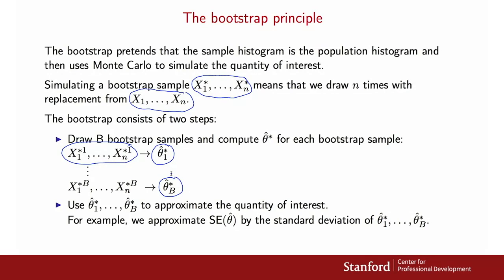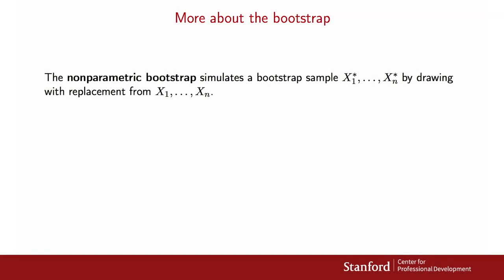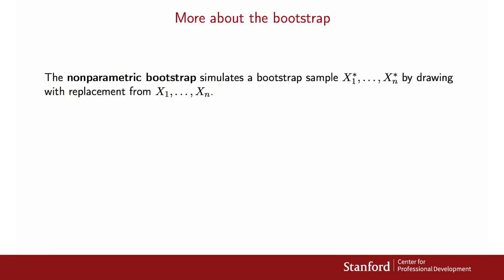The bootstrap uses two approximations. In the first, it replaces the population histogram by the sample histogram. In the second, it uses Monte Carlo to approximate a quantity by the law of large numbers. Drawing a bootstrap sample by sampling with replacement from the data is called nonparametric bootstrap. Sometimes we know more — for example, that the data follow a normal distribution but with unknown mean and standard deviation. In that case, we estimate those parameters and sample from the normal distribution with that mean and standard deviation. That's called parametric bootstrap.